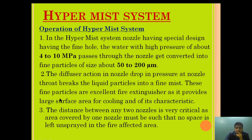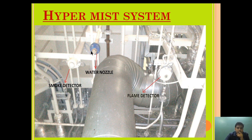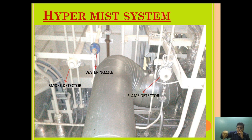These fine particles are excellent fire extinguishers as they provide a large surface area for cooling. The fog-like mist causes both a smothering and a cooling effect. The distance between nozzles is very critical — the area covered by one nozzle must be such that no space is left unsprayed in the fire-affected area. For example, if one nozzle covers 5 meters but the boiler platform is 10 meters, two Hypermist nozzles must be provided to cover the whole area.